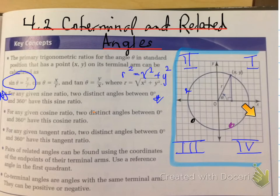In these different quadrants, points have either positive or negative x or y values. You need to understand how to determine the sine, cosine, and tangent ratios. For any given sine ratio, two distinct angles between 0° and 360° have this sine ratio, meaning there are two quadrants in which sine is positive